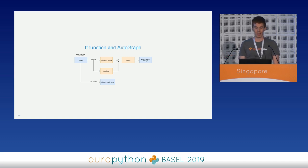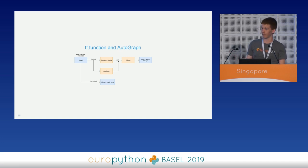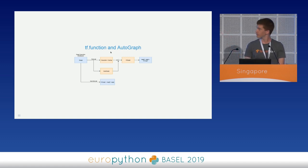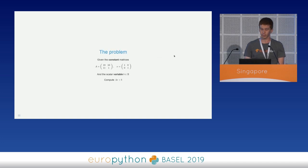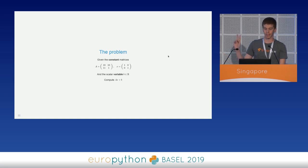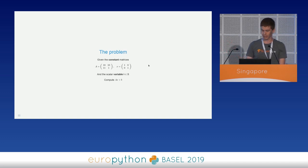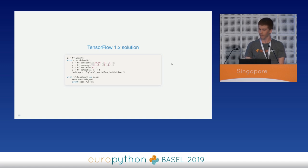Now that we have a basic understanding of how TF function works, we can start using it to solve a simple problem and see if everything goes as described. The problem is really easy — it's just a multiplication of two constant matrices, followed by the addition of a scalar variable b. This is the TensorFlow 1 solution.